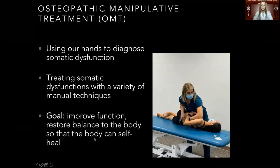We use OMT to treat somatic dysfunction. Somatic dysfunction is a disturbance in the musculoskeletal system that can cause problems with how the body functions. We use the musculoskeletal system to help us identify problem areas. We have trained our hands to detect changes in the tissues of the body. OMT is not limited to only musculoskeletal complaints — for example, we also have techniques that can address a person with heart failure presenting with edema. We do not claim to heal the body; instead we try to bring the body back to a state where it can function optimally, which may improve their quality of life.